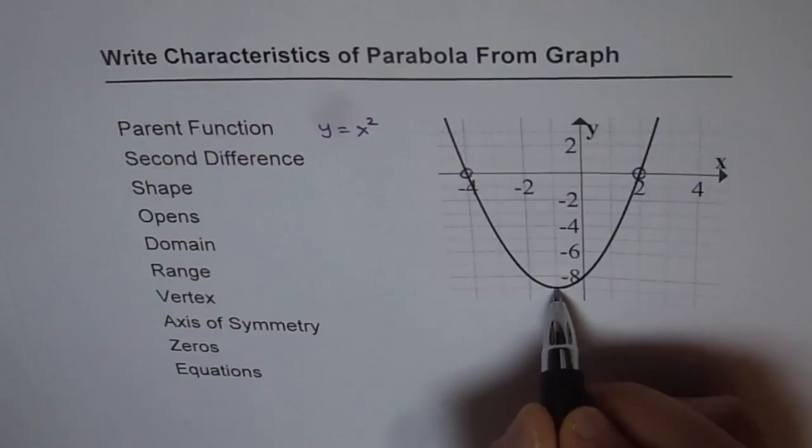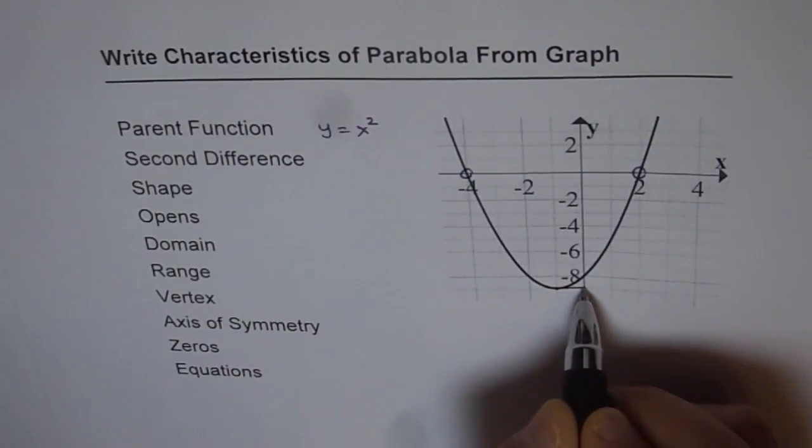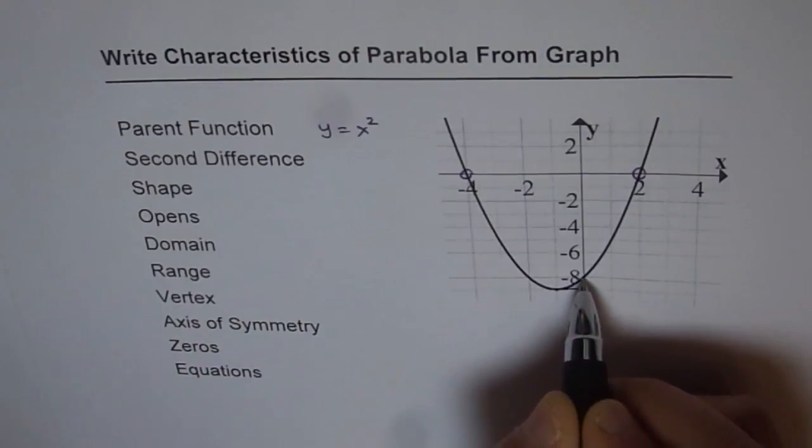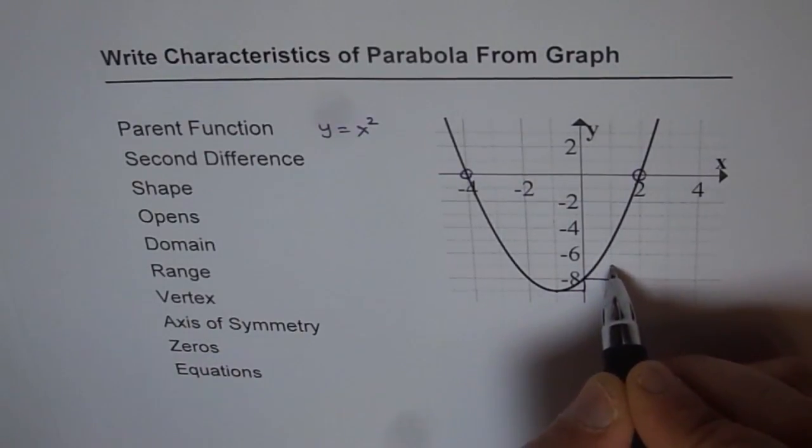Now if you see from here, if you move one step right, then how much do you go up? You go 1. If you move this step right, how much do you go up? 1, 2, 3. So the steps are 1, 3, 5, 7.